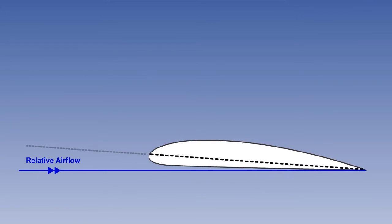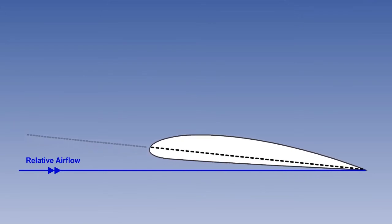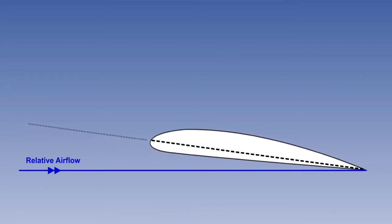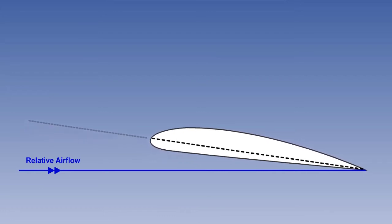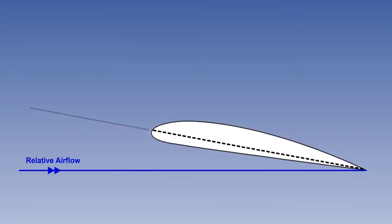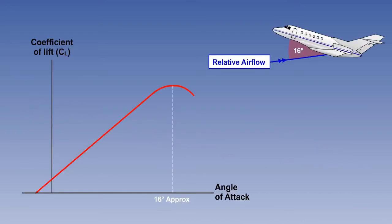For subsonic flight, both lift and drag coefficients increase as the angle of attack becomes larger. Maximum lift is usually obtained at a relatively high angle of attack. If the angle of attack is increased beyond this point, even by a small amount, the coefficient of lift reduces abruptly. We can see this in graph form if we represent the coefficient of lift with a red line. Notice how the coefficient of lift reduces rapidly as an angle of attack of 16 degrees is approached.